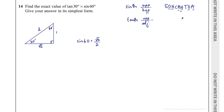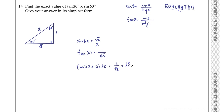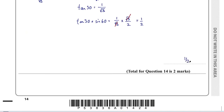Now multiply them together: tan 30 times sin 60 equals (1/root 3) times (root 3/2). The root 3 terms cancel, leaving 1 over 2. So the exact value of tan 30 multiplied by sin 60 is 1/2. That was question 14 for 2 marks.